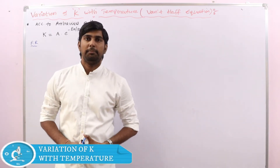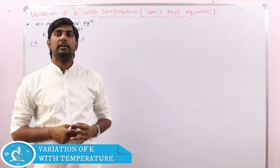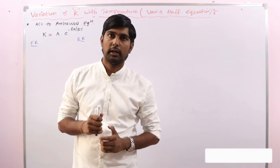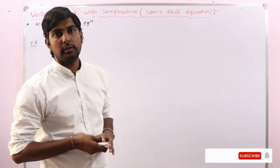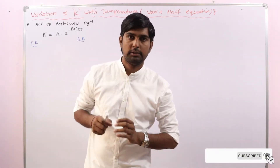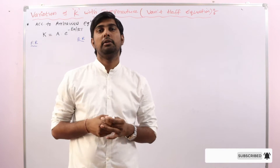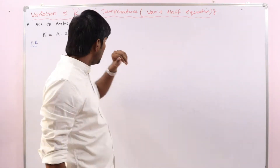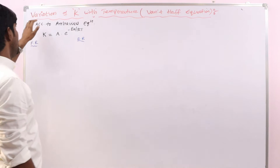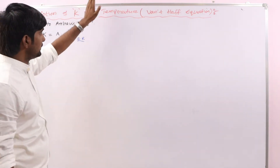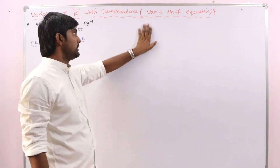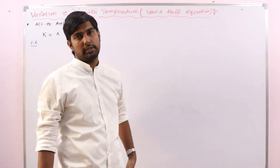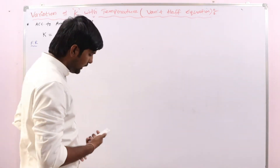In the previous lecture we discussed the characteristics of equilibrium constant, and we discussed that the only experimental factor which influences the equilibrium constant is temperature. So first we discuss the variation of equilibrium constant with temperature. This is given by the Van't Hoff equation, also called the Van't Hoff equation.